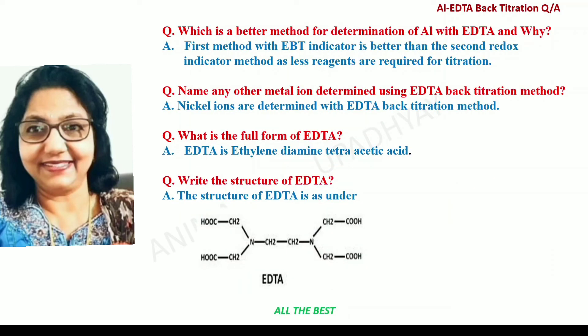Which is the better method for determination of Aluminium with EDTA and why? The first method with EBT indicator is better than the second redox indicator method, as fewer reagents are required. Name any other metal ion that can be determined using EDTA back titration method. Nickel ions are also determined with the EDTA back titration method. What is the full form of EDTA? The full form of EDTA is Ethylene Diamine Tetra Acetic Acid. Write the structure of EDTA — the structure of EDTA is shown here.